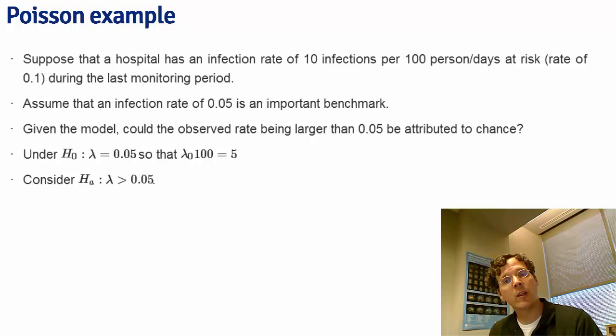What we want to know is if, in fact, the rate is 0.05, having been monitored for 100 person days at risk, what's the probability of obtaining 10 or more infections?